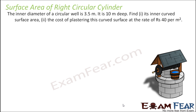The inner diameter of a circular well is given as 3.5 meters and its depth is 10 meters. The radius is 3.5 divided by 2, that is 1.75 meters. We need to find the inner curved surface area.